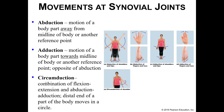At some joints you can also do circumduction — a little bit of flexion, a little bit of extension, a little bit of abduction, a little bit of adduction. We're going in a circular motion, like arm circles. The distal end of the body part moves in a circle. You could also do this with your hip, but think about your elbow — you cannot move your elbow in a circular motion.